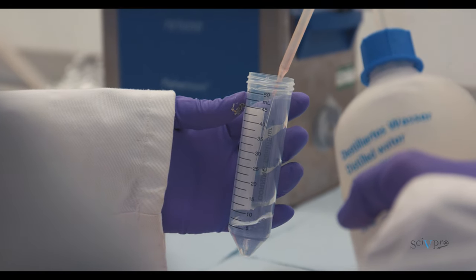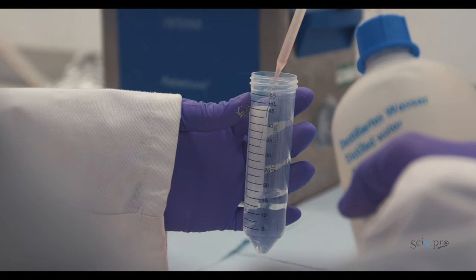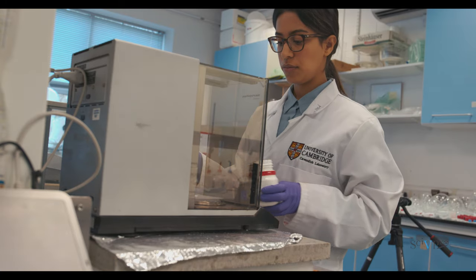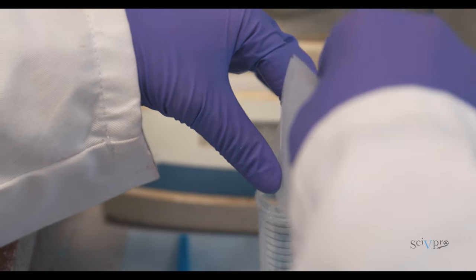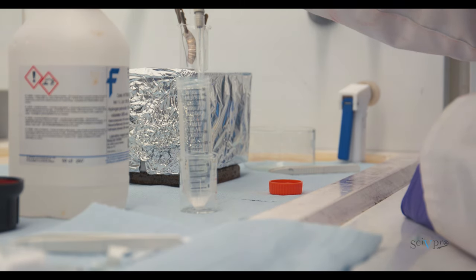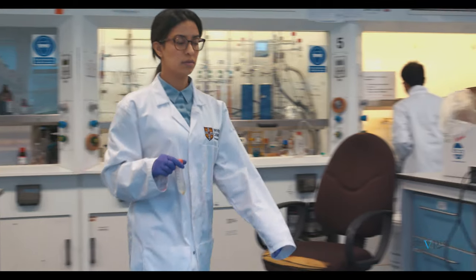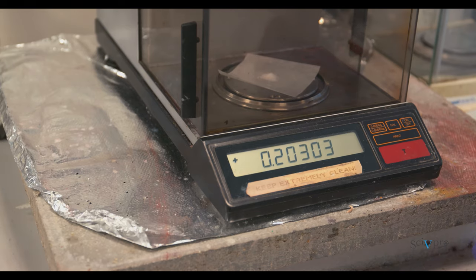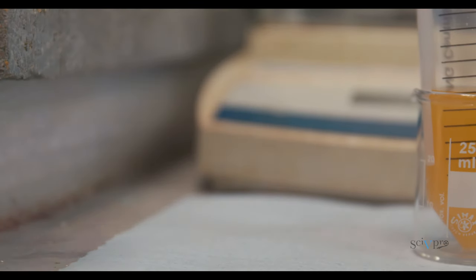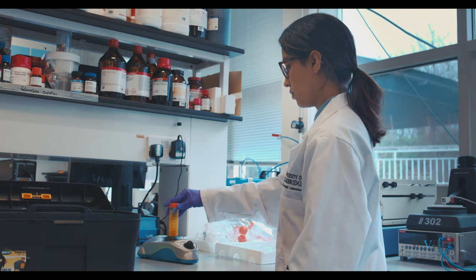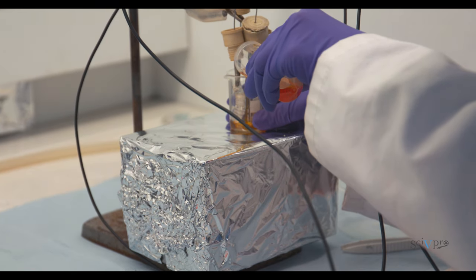Pour 20ml of deionized water into a 50ml centrifuge tube. Weigh 64 mg of titanium oxysulfate salt with precision scales and transfer it to the centrifuge tube. Add 366 µl of hydrogen peroxide to the centrifuge tube. Mix the solution with a centrifuge. Weigh 202 mg of potassium nitrate and transfer it to the centrifuge tube. Mix the solution again. Finally, pour the solution into the beaker.